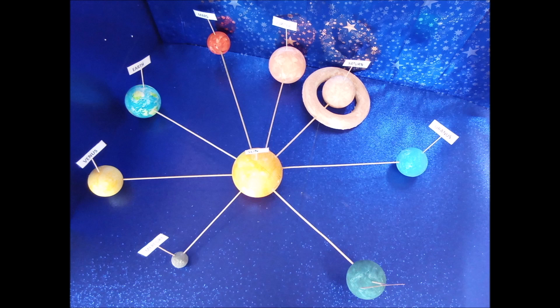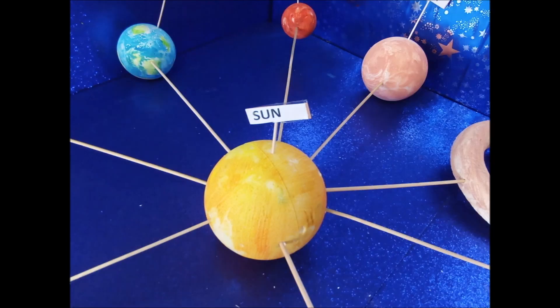Planets, moons, comets, asteroids and meteors. What is the star at the center of our solar system? It's the sun.